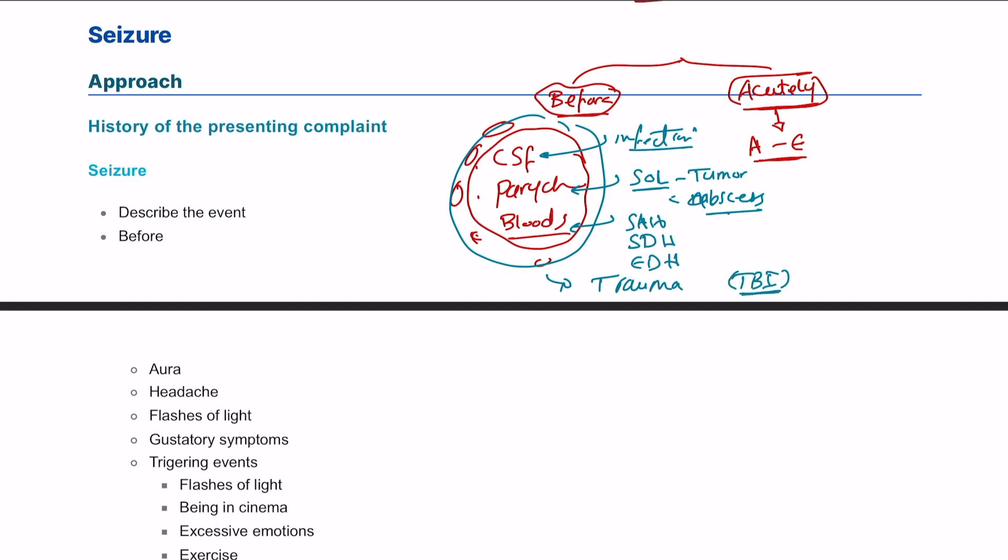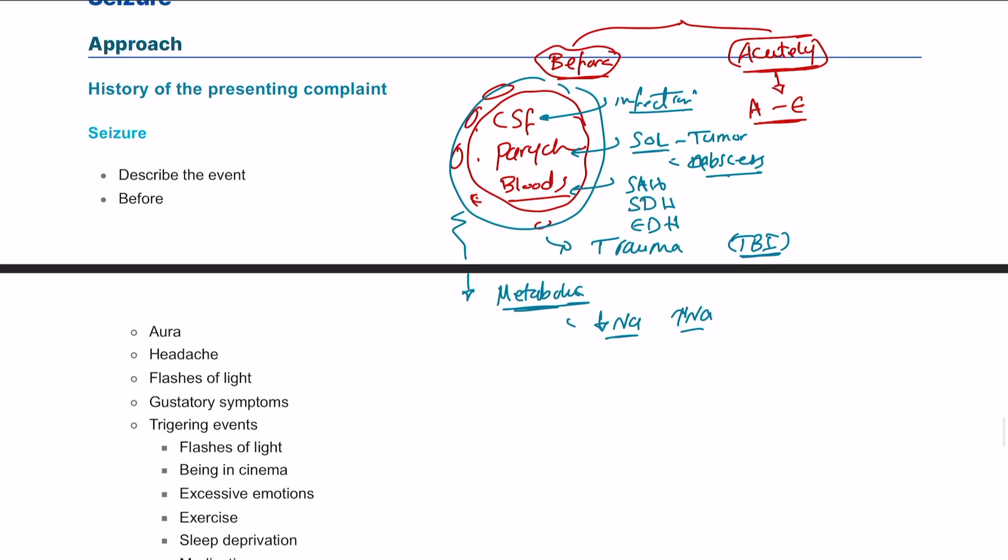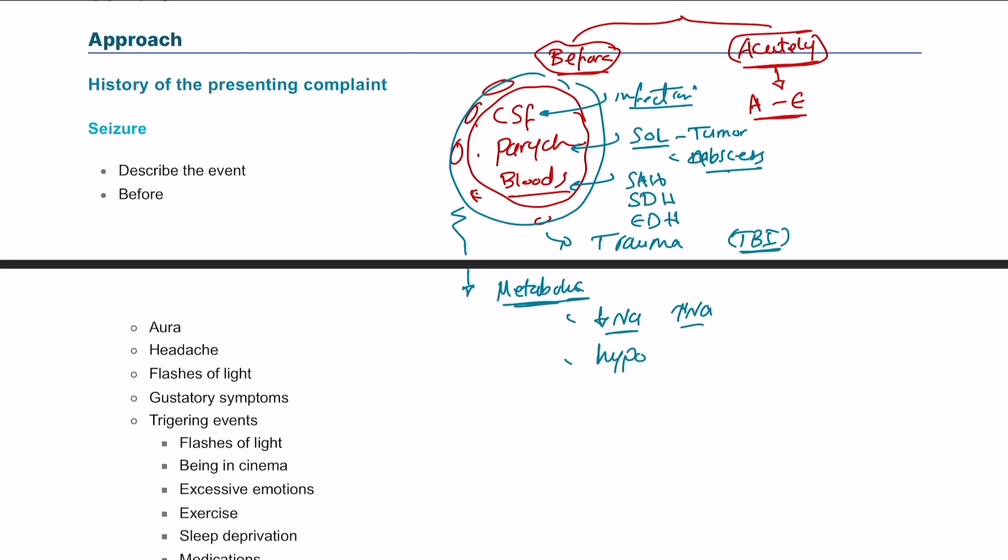So generally, that would be the causes of seizure. But in addition to that, the brain needs some metabolites, and it needs blood supply, it needs oxygen, and so on. So basically, metabolic disorder, and this metabolic disorder, most importantly, hyponatremia, or even hypernatremia can lead to that, and hypoglycemia can lead to seizure as well. So these are the differential diagnoses for seizure.